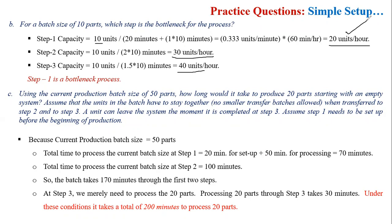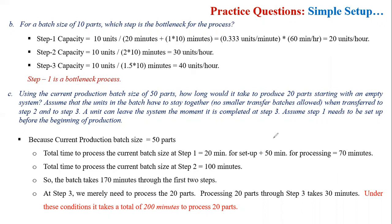With a smaller batch size, you will see that the bottleneck operation shifts — because step one has setup time. So with the smaller batch size, we calculate step number one as the weakest link, and that becomes the new bottleneck.